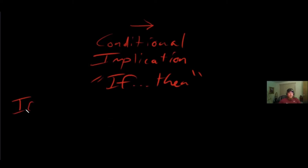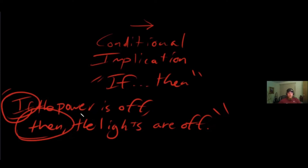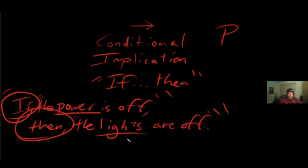Let's start with an example. If I say: 'If the power is off, then the lights are off.' There are two words that let me know this is a conditional statement: the word 'if' and the word 'then.' Since this is a compound statement, there are actually two statements in here. The power is off — let's call that P. And the lights are off — let's call that L.